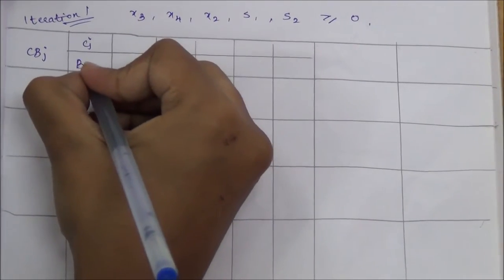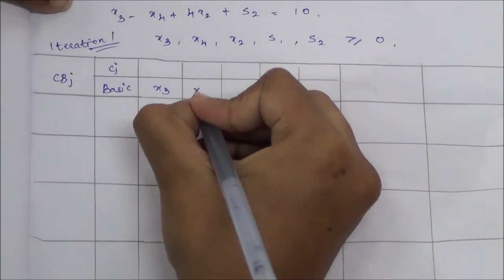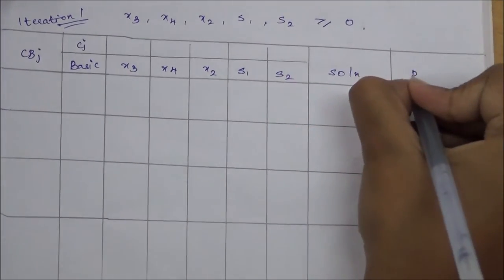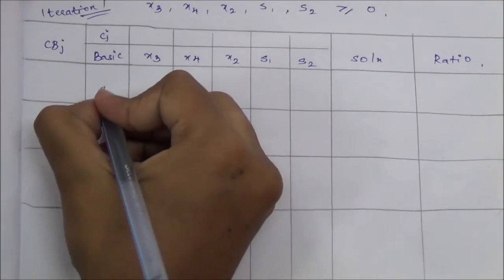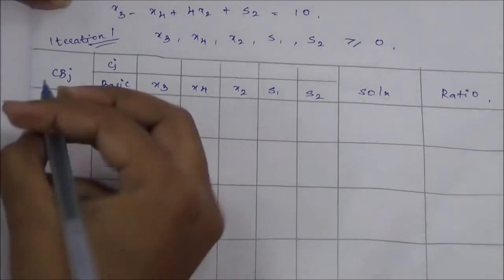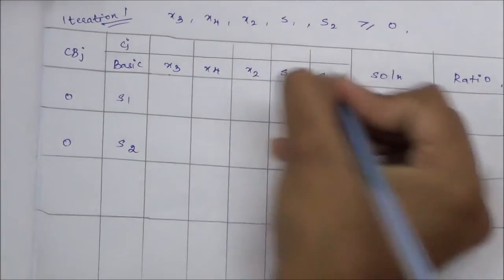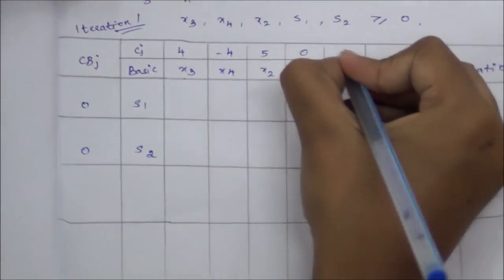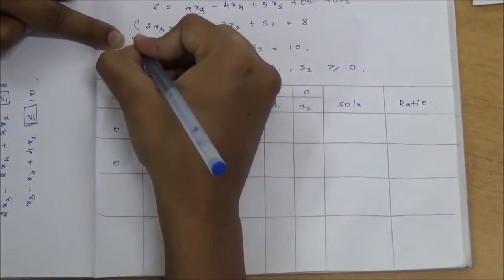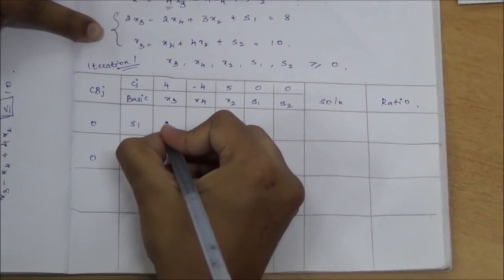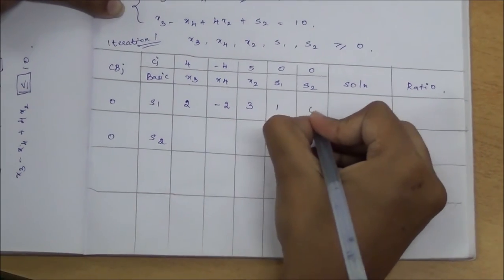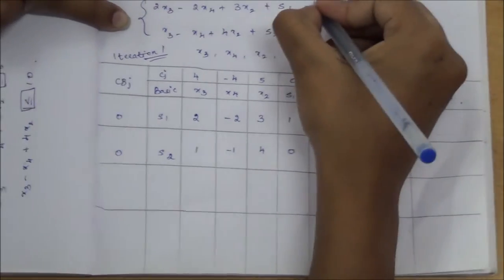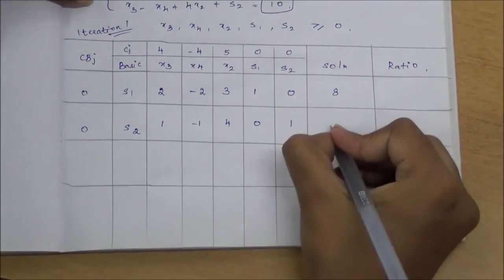The simplex table has columns for basic variables, x3, x4, x2, s1, s2, solution, and ratio. In the basic column we include the slack variables s1 and s2 with coefficients 0 and 0. The cj row coefficients are 4, minus 4, 5, 0, 0. The constraint row for s1 is: 2, minus 2, 3, 1, 0; and for s2: 1, minus 1, 4, 0, 1. The solution (right-hand side) values are 8 and 10.